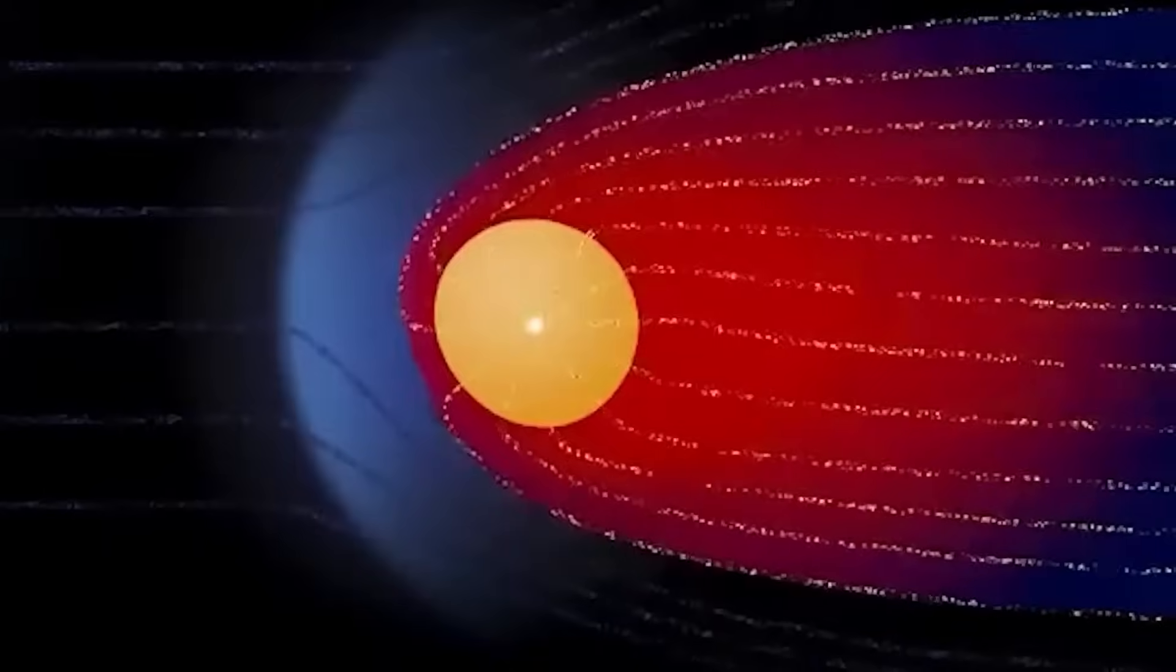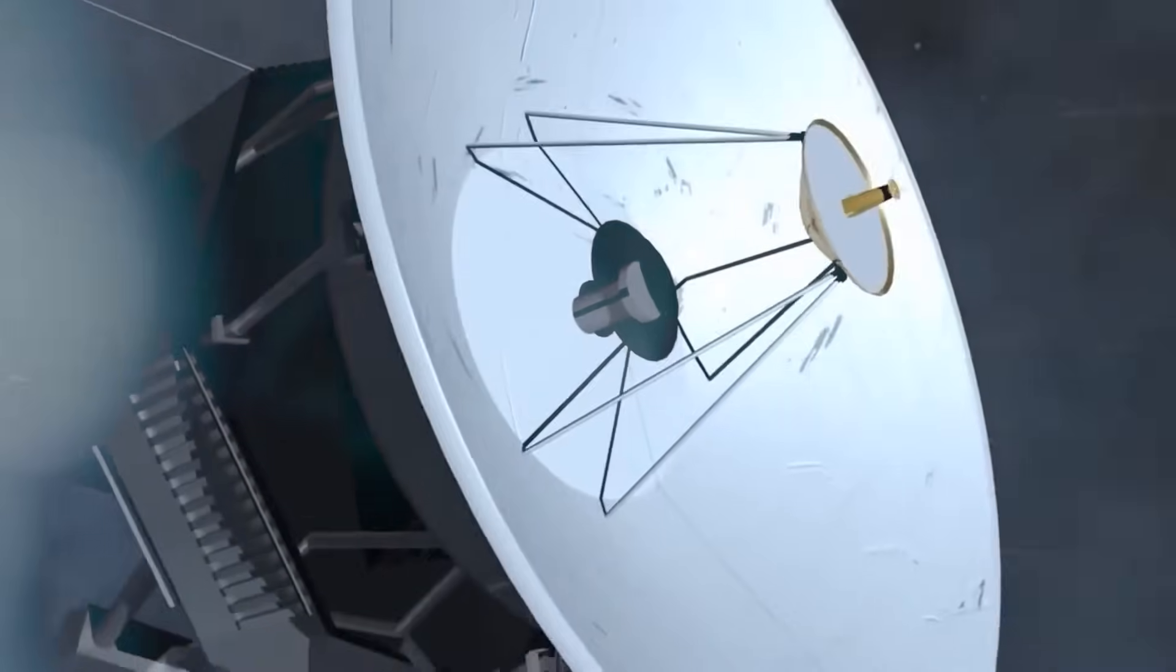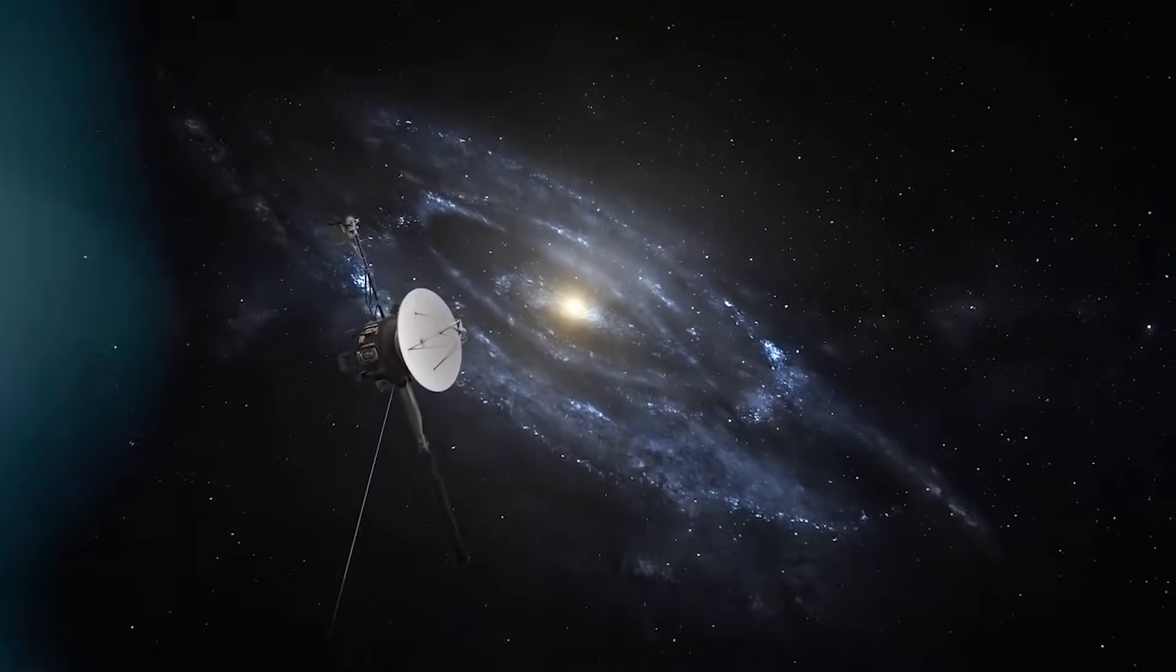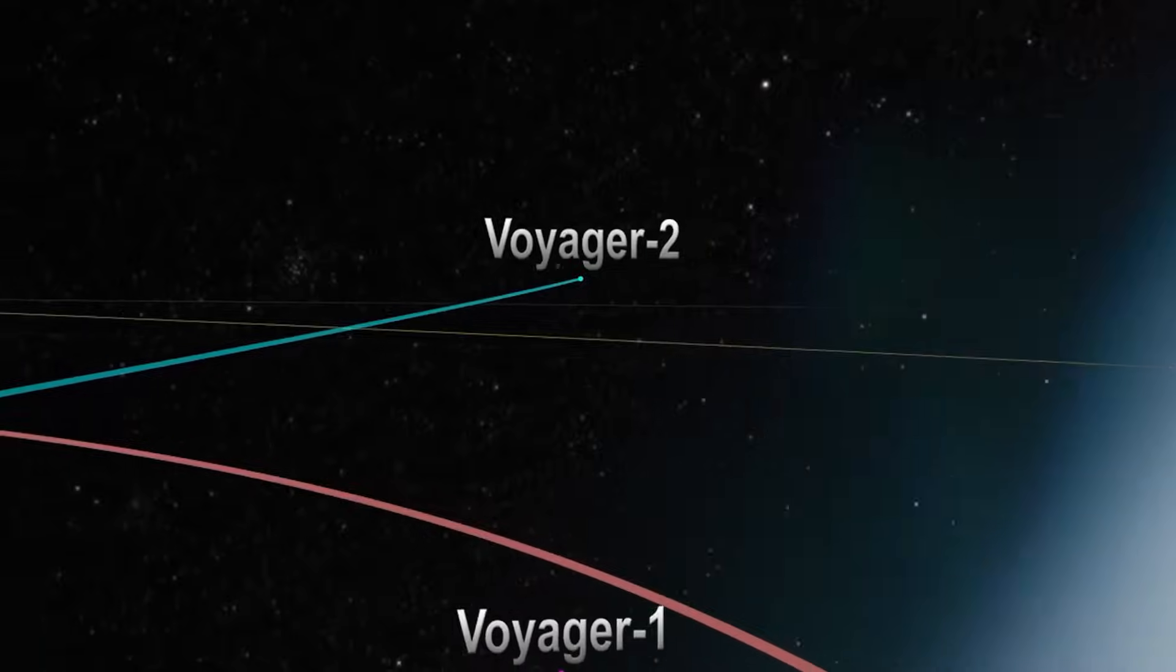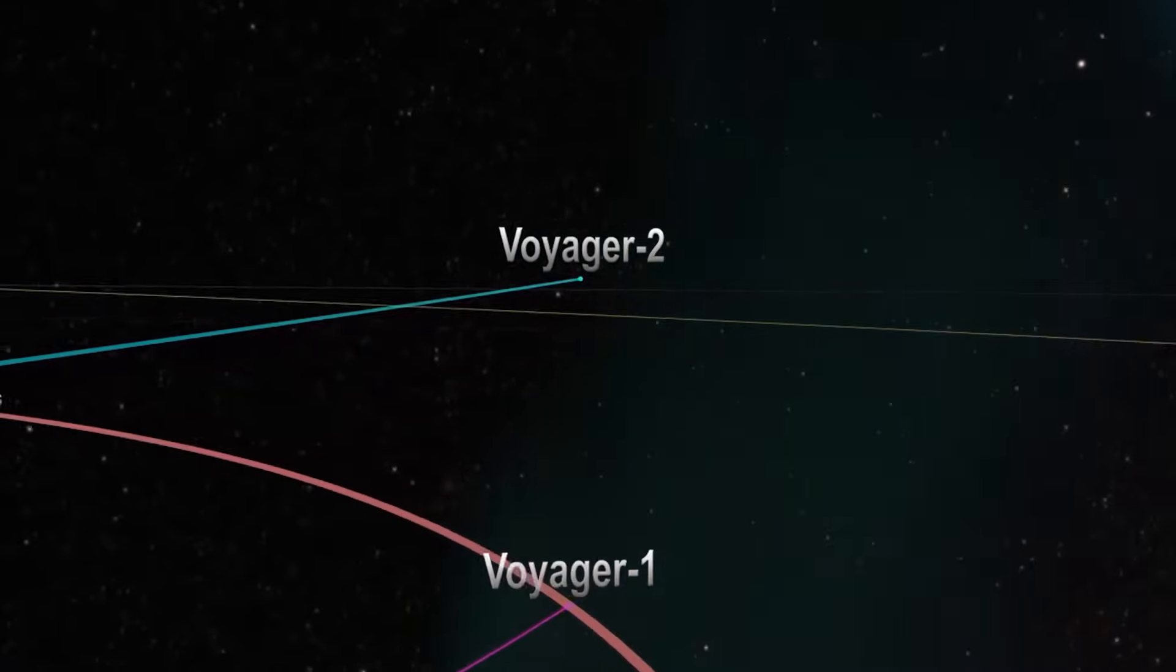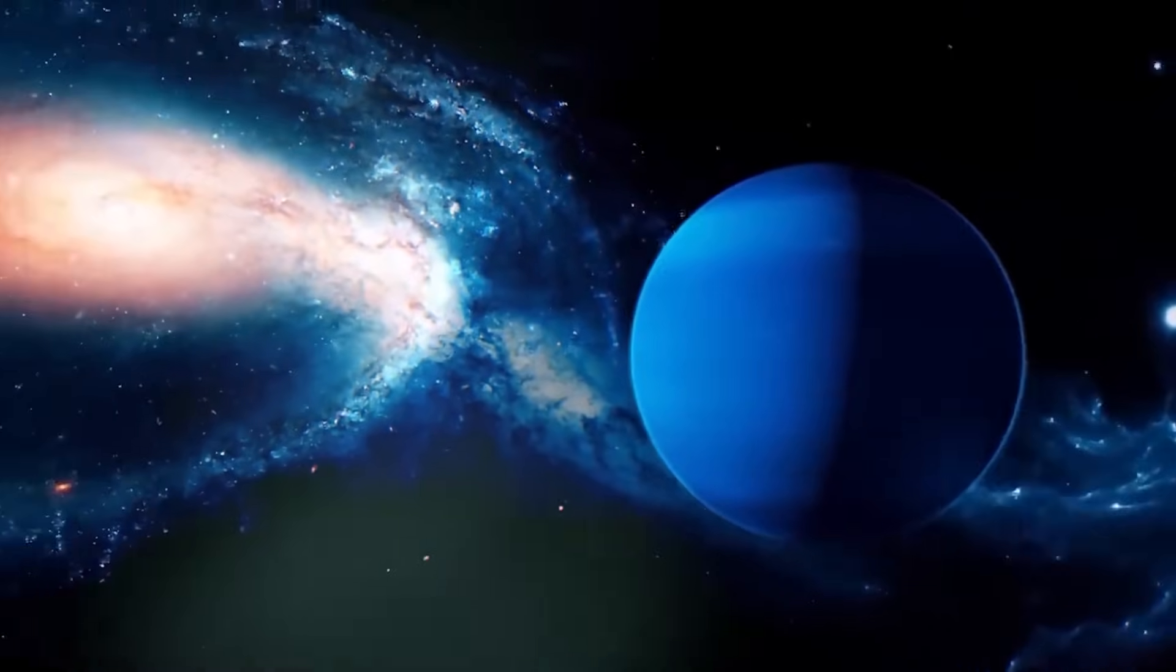Weeks after the initial glitch, Voyager 1 began transmitting a new set of data from its plasma wave instrument. Nothing unusual at first glance, until analysts noticed an irregular spike, a pulse in the readings that appeared like a heartbeat. It pulsed once, then again, then vanished.